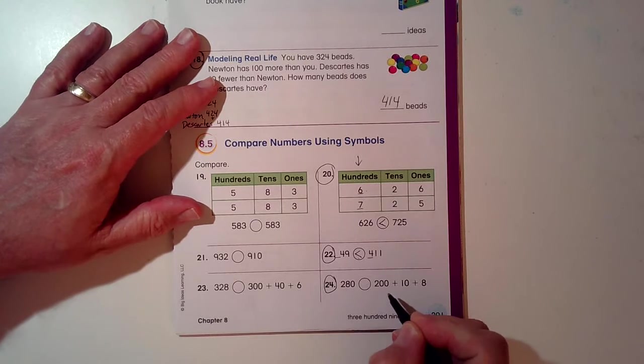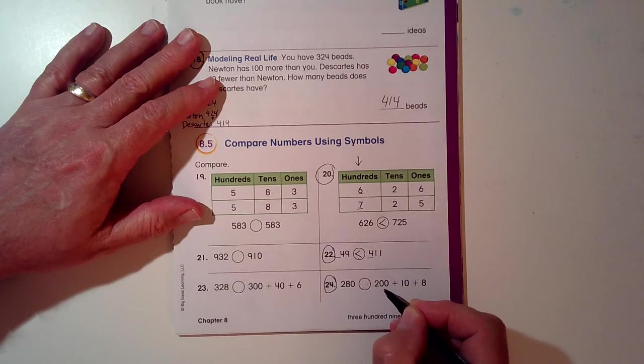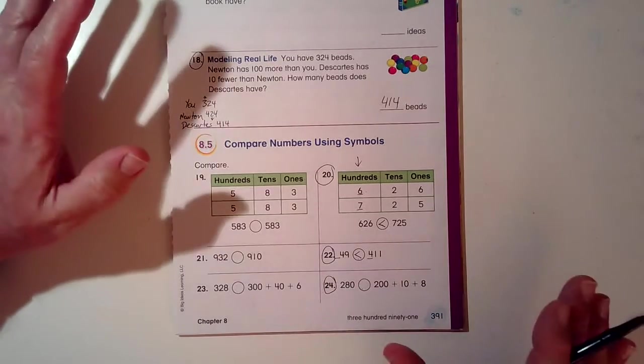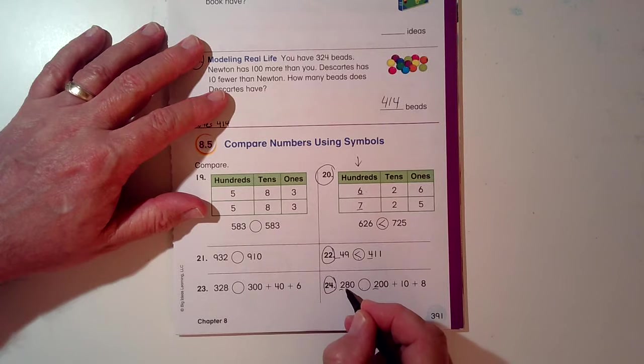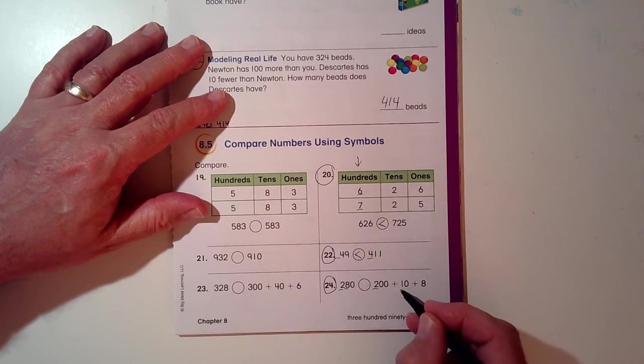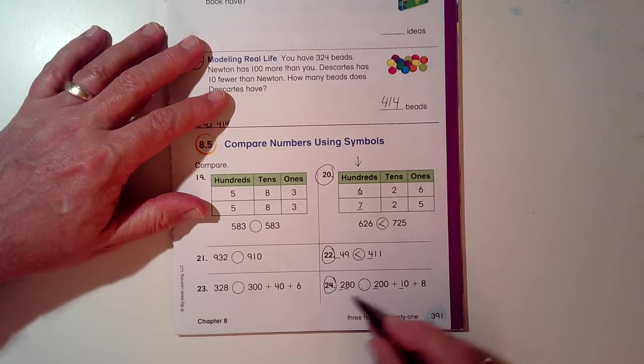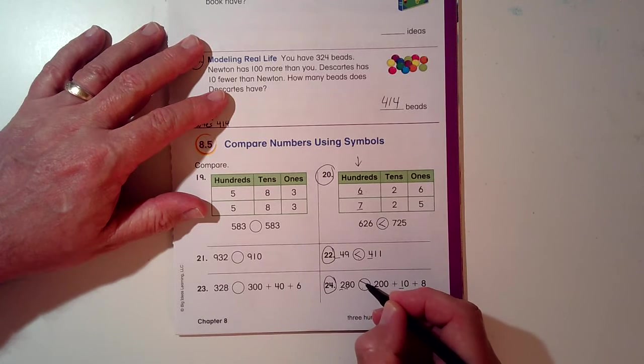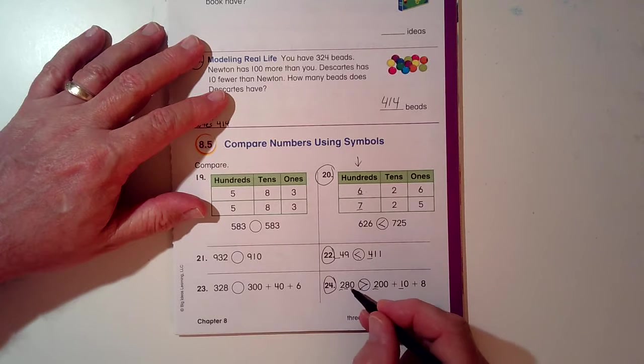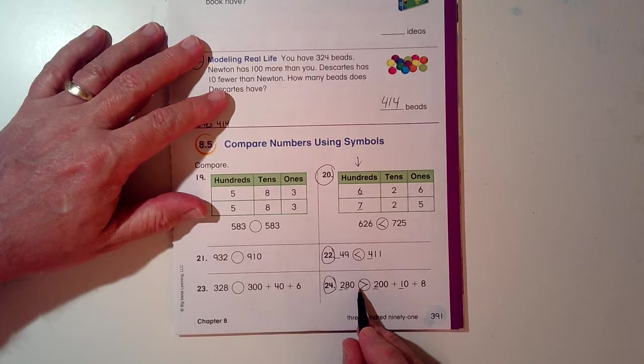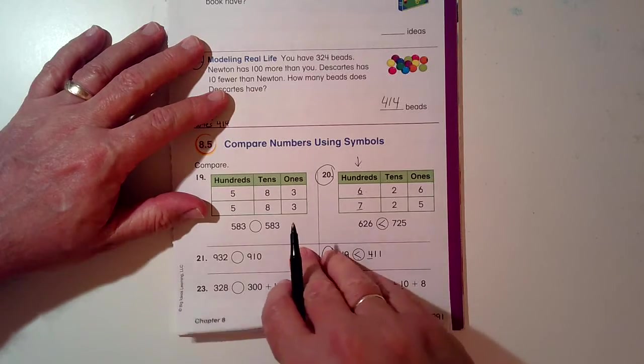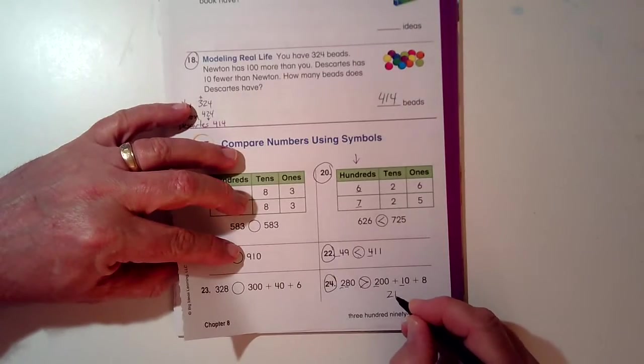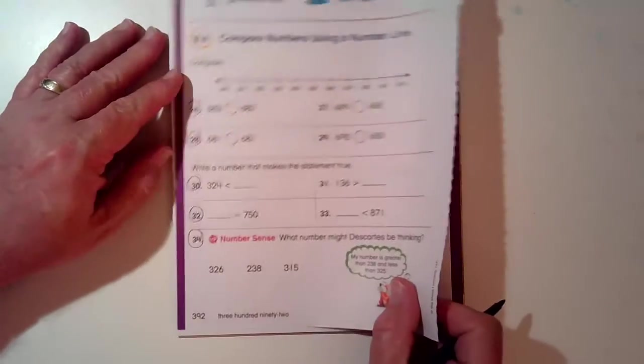Let's take a look here. 280 is something to 200 plus 10 plus 8. So, we can do this. We don't need to put it together, but you can. This has 200. This side has 200. This side has 8 tens. This side only has 1 ten. So which one is bigger? I stop here, and I go toward the bigger one, the opening toward the bigger one. 280 is greater than 200 plus 10 plus 8. And if you added these together, it would be 218.